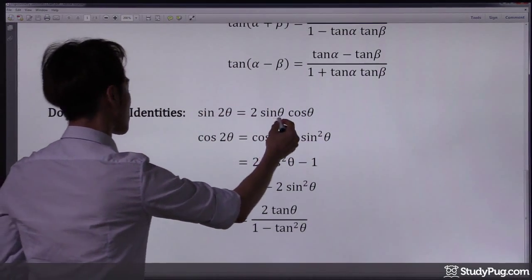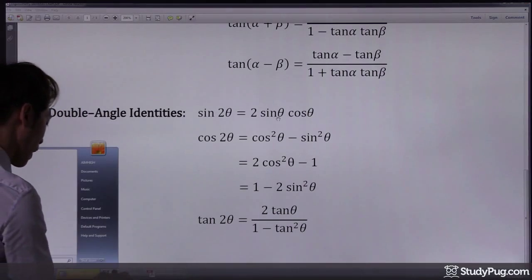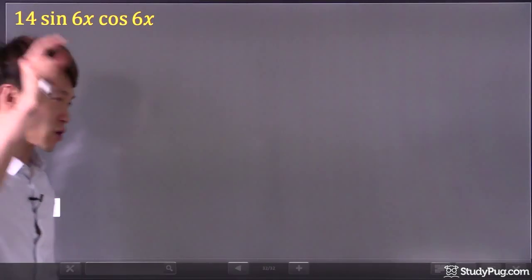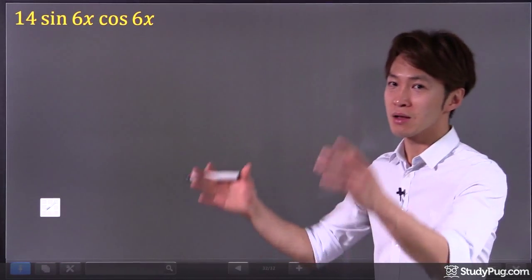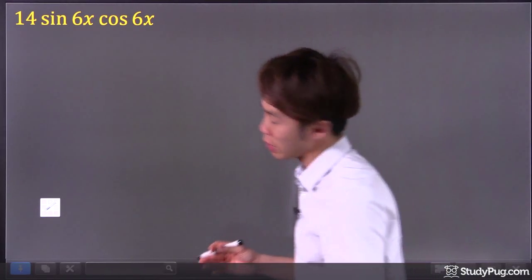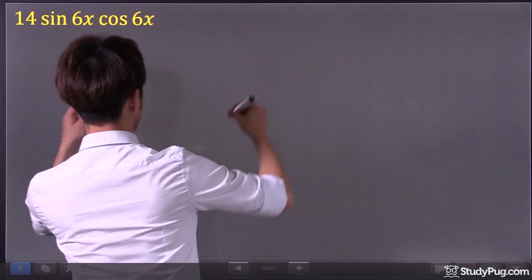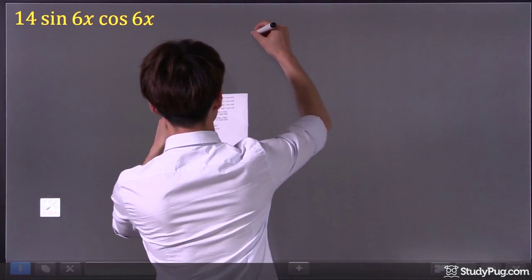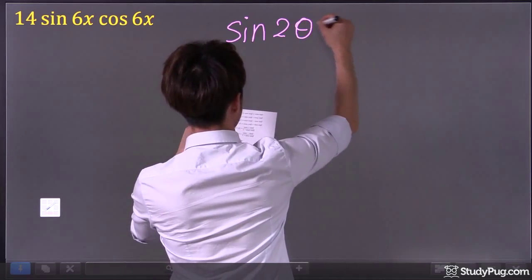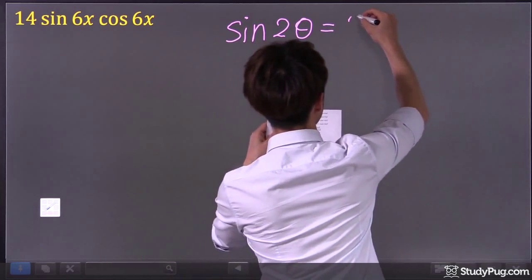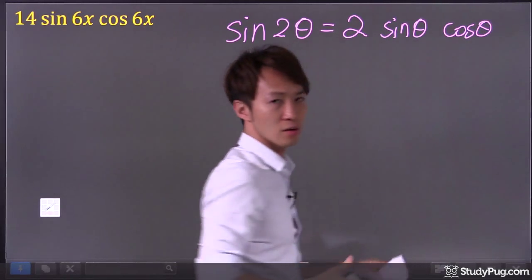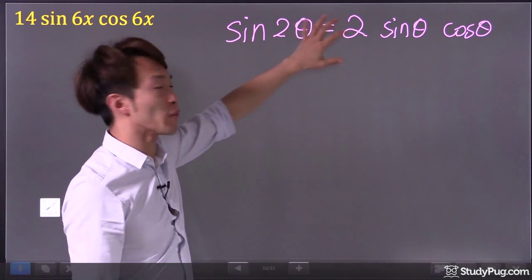Sine two theta, right? So coming back to the question. And guys, here's the trick. Now we know which formula we're going to be using. We're going to be using this formula. Sine two theta equals two sine theta, cosine theta, right? So we know we're going to be using this formula for this question.